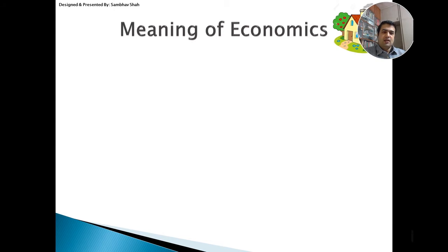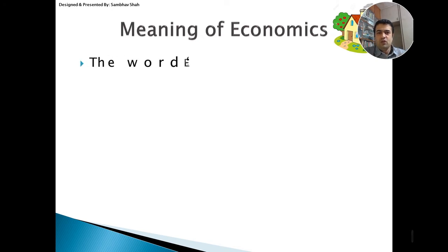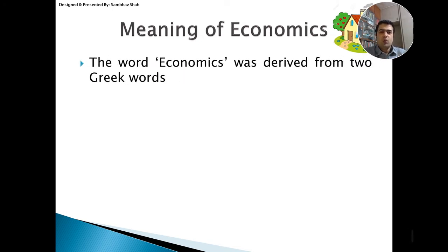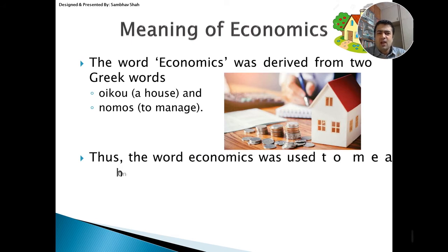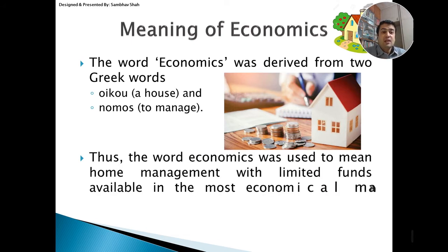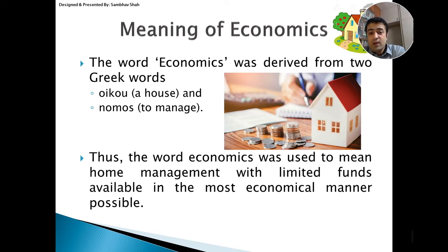What is the meaning of economics, basically? The word economics was derived from two Greek words — oikos, meaning a house, and nomos, meaning to manage. It means basically that how are you managing the house. So the word economics was used to mean home management, with limited funds available, used in the most economical manner possible. This is what economics is all about.